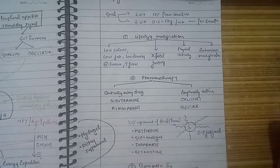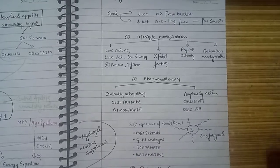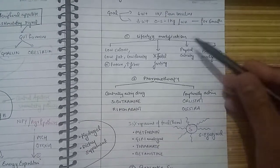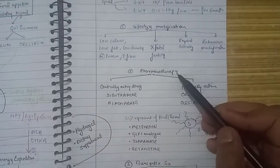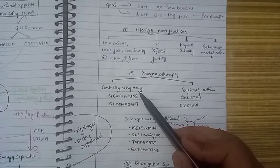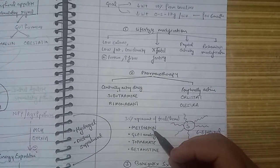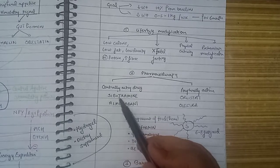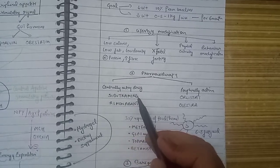Following lifestyle modification, we go for pharmacotherapy. We have centrally acting drugs and peripherally acting drugs. One centrally acting drug is sibutramine, which decreases monoamine uptake.